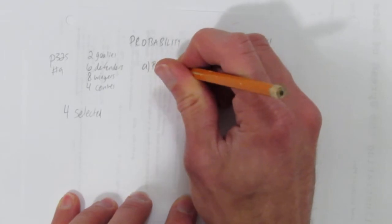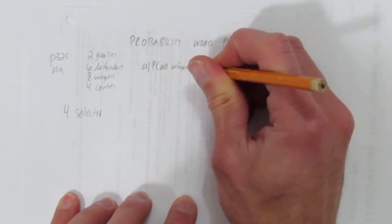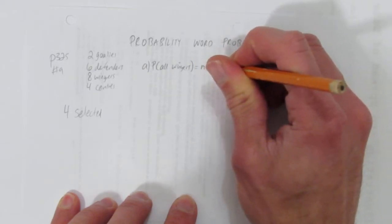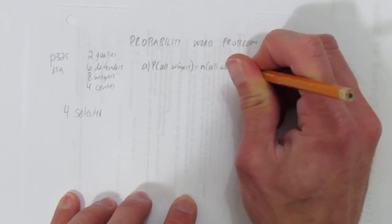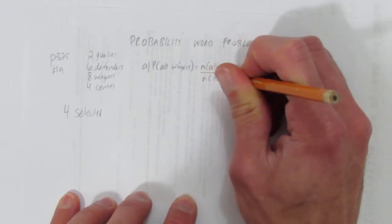So to find the probability that they're all wingers, we need to look at the number of ways they can be chosen all wingers over the total number of ways we can choose, without restrictions.